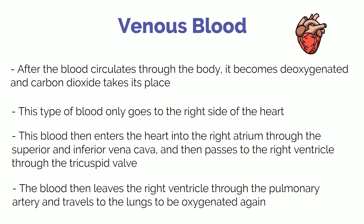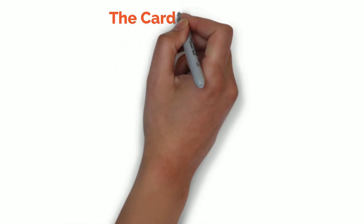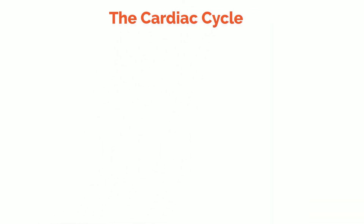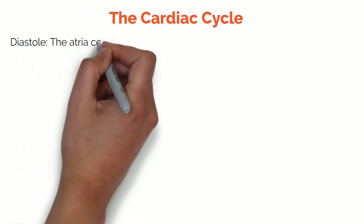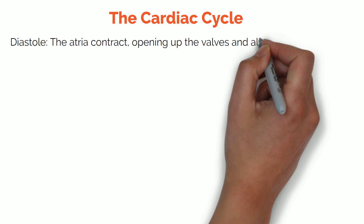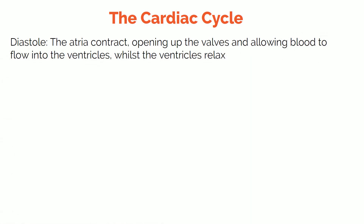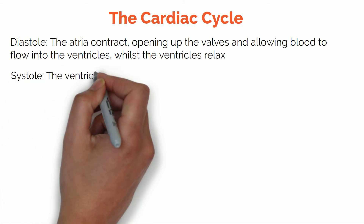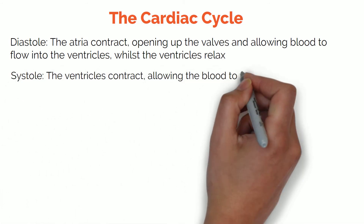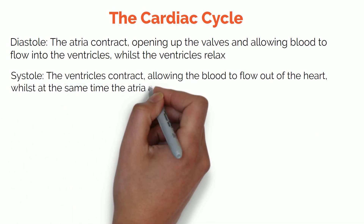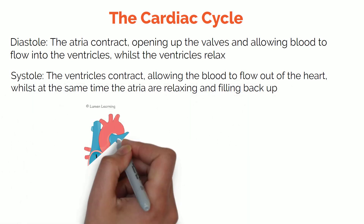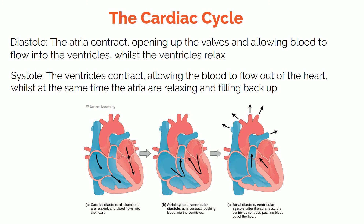And this is just one heartbeat, so the heart really is the hardest working organ in our body. This creates a cardiac cycle of movements which allow the blood to be circulated through the body. The first movement is a diastole, which is when the atria contract, opening up the valves and allowing blood to flow into the ventricles. Afterwards, there is a systole, which is where the ventricles contract, allowing the blood to flow out of the heart, whilst at the same time the atria are relaxing, letting more blood into them to prepare for the next cycle.